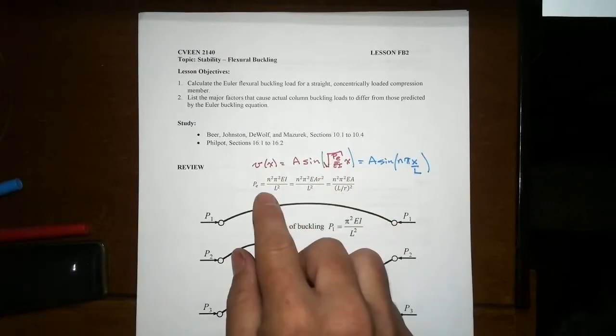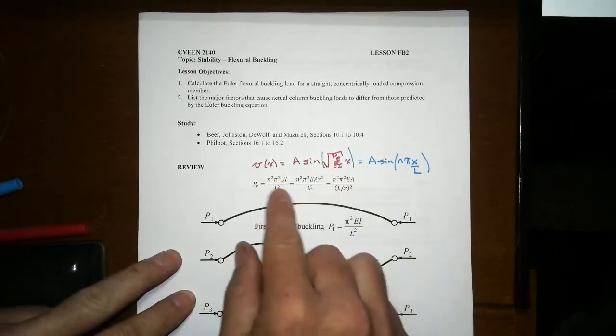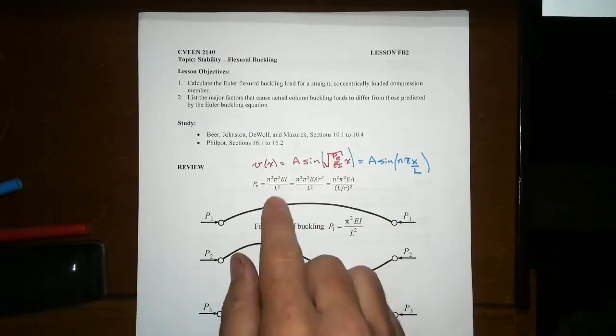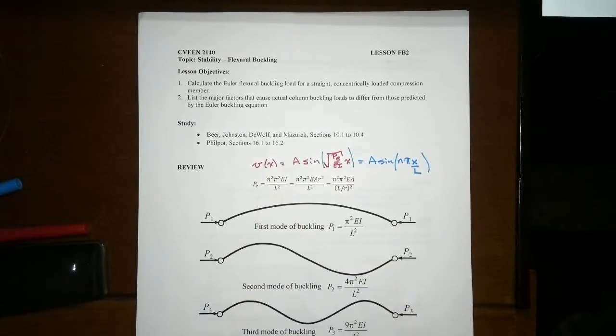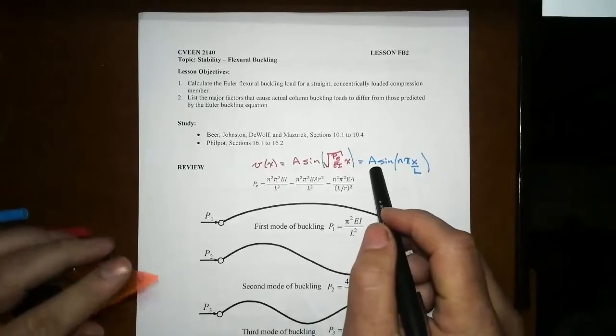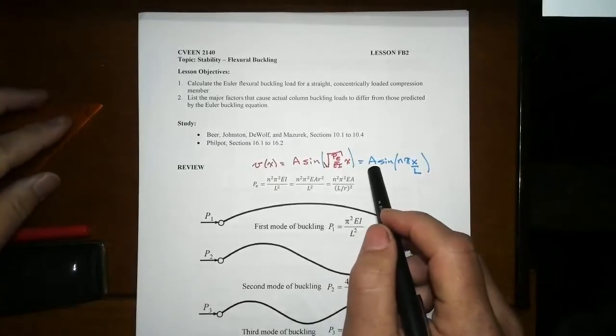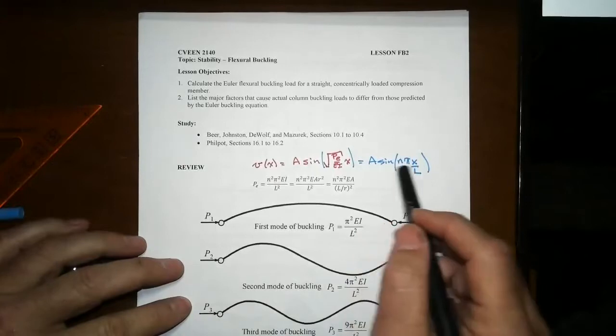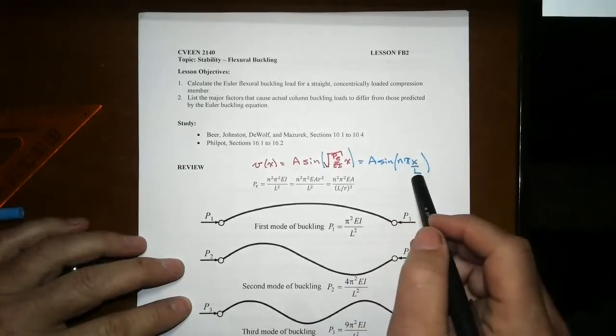But what was that PE? And we get this value here. That's what those values give us - the non-trivial answers that ultimately boil down to a displaced shape when it buckles of some constant times the sine function n pi x over L.